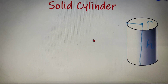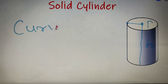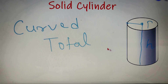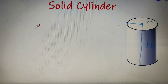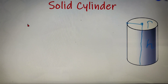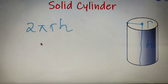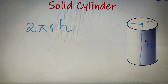There are two types of surface area for a solid cylinder: the curved surface area and the total surface area. The curved surface area is also called the lateral surface area, and its value is 2πrh — where r is the radius and h is the height of the cylinder.